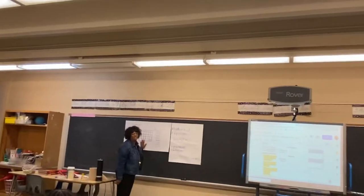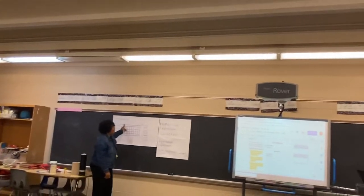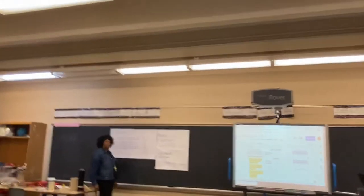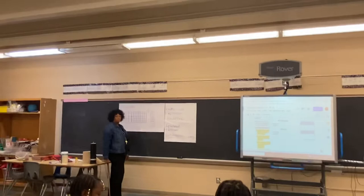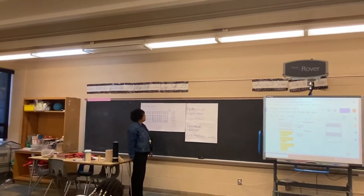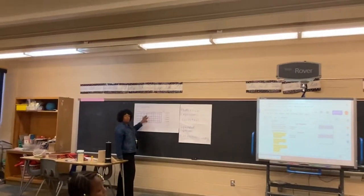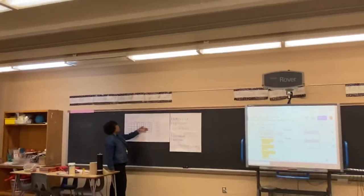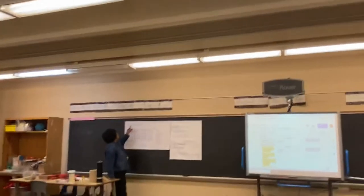Can I have someone read the definition that talks about conjecture? A conjecture is your best guess about an observed pattern or relationship. You can use models, drawings, or other kinds of elements to support your conjectures. So this right here is a model. Anytime you use a model to express your answer, this is called a conjecture.